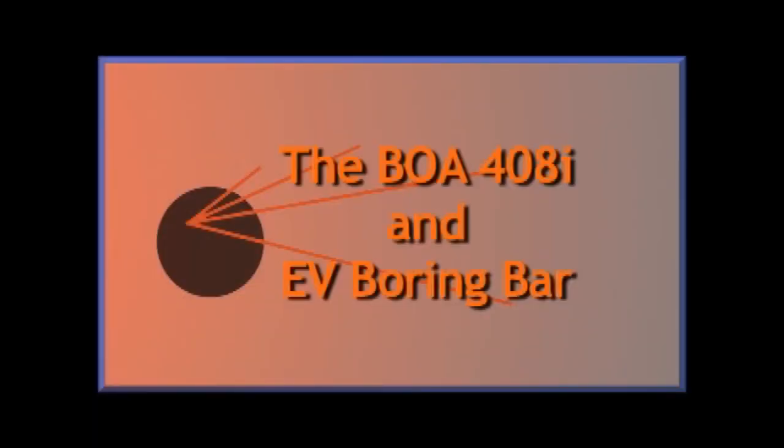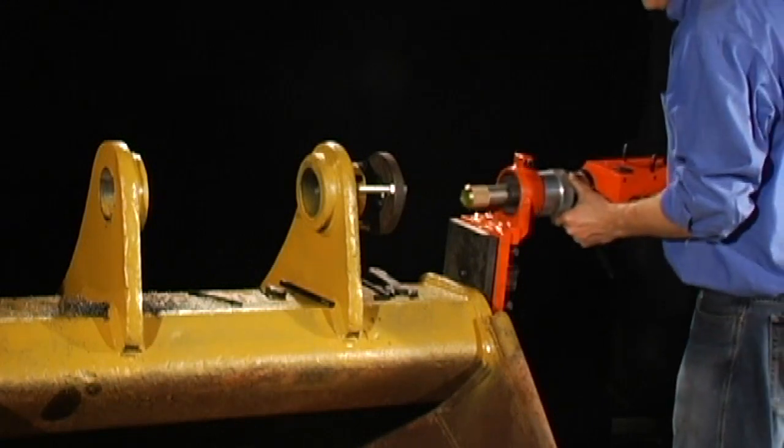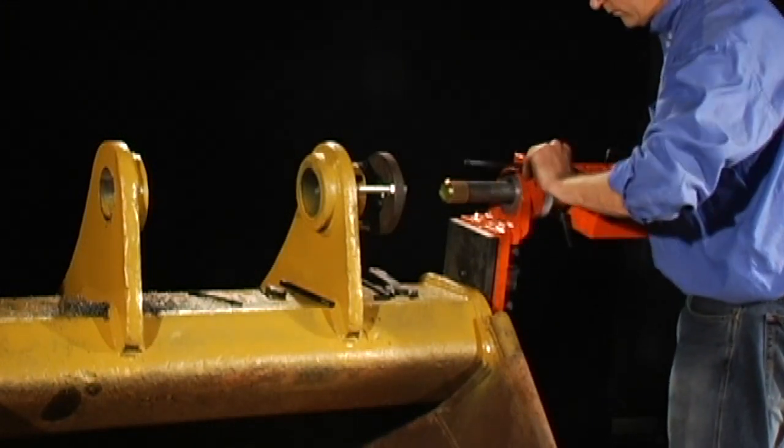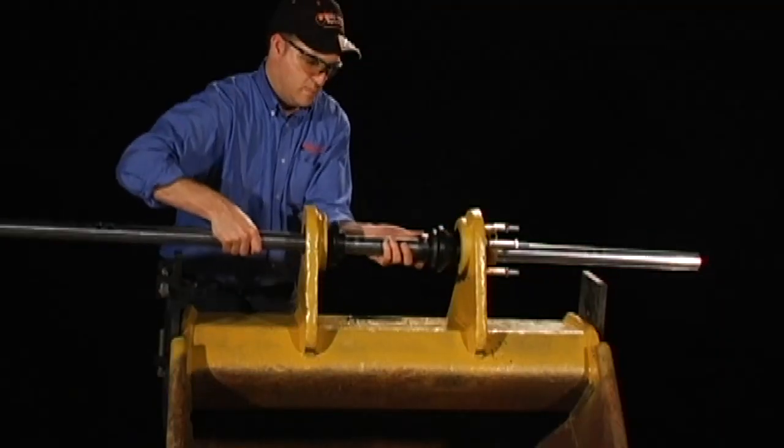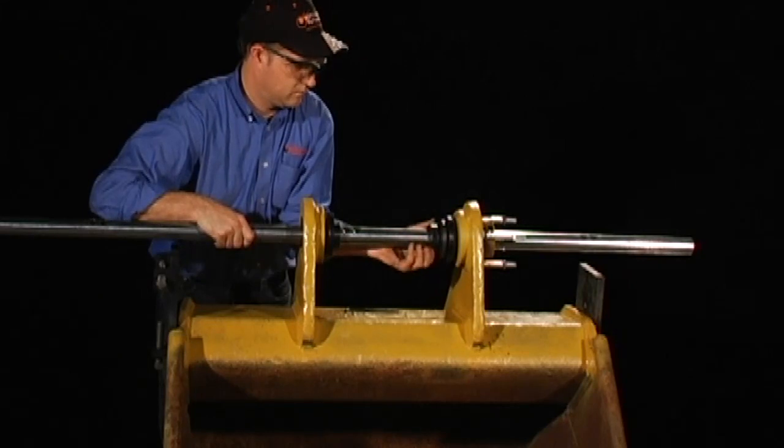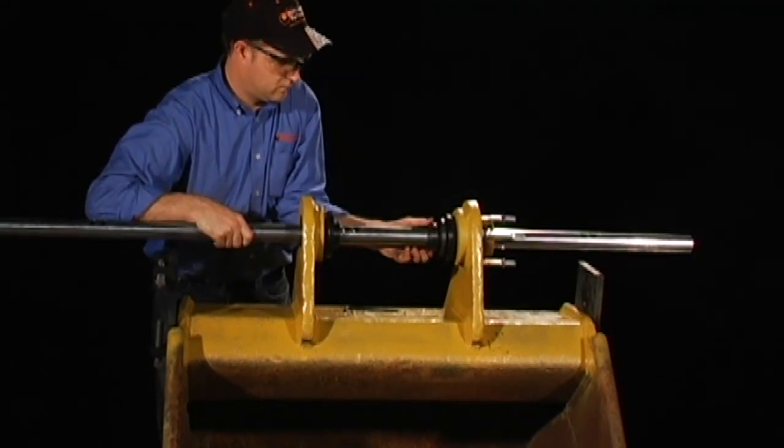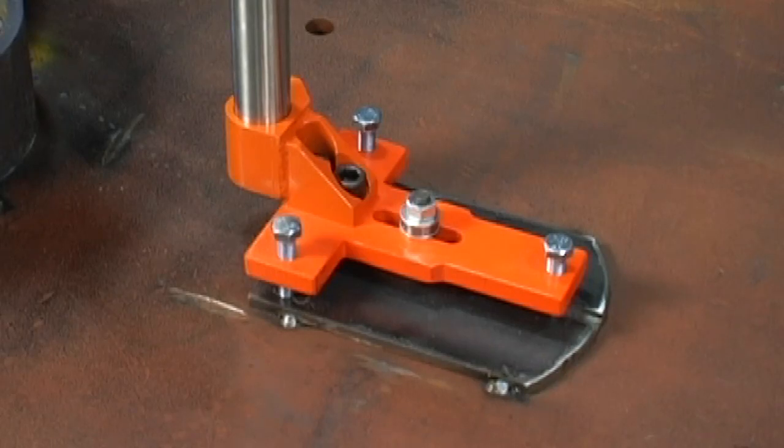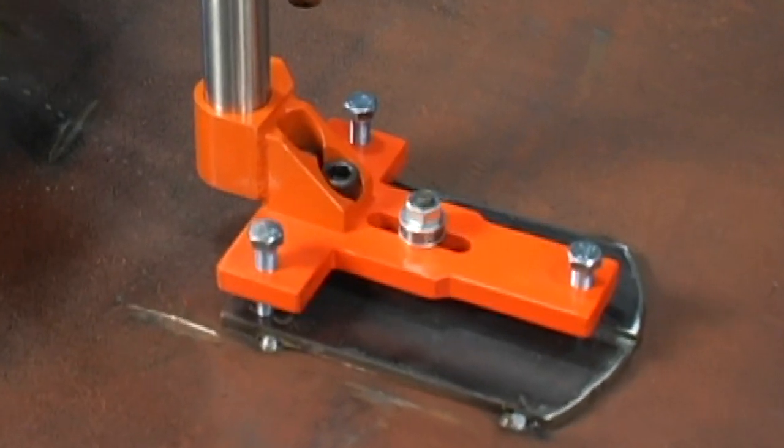The basic 408i bore welding system comes standard with a tack plate which will allow you to support the bore welder using the machine support tube. Centering the BOA 408i bore welder is easily achieved by using your inch and a quarter boring bar or the optional centering tube and cone kit.